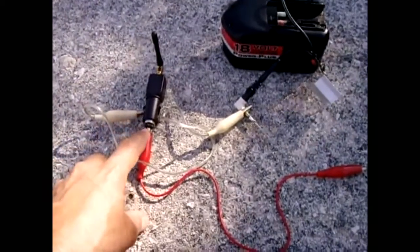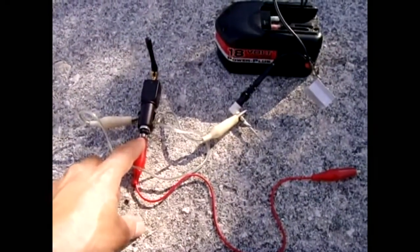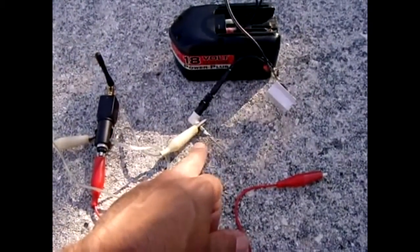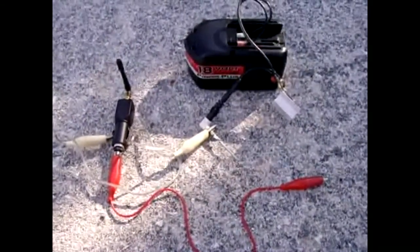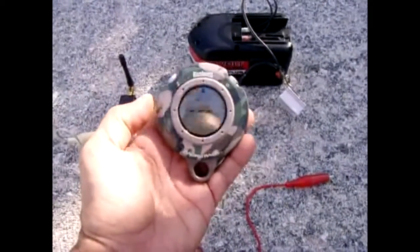Now to demonstrate how well this GPS jammer works, I have the GPS jammer connected up to a 12-volt power supply, 12.5 volts, just like it would be inside your vehicle.